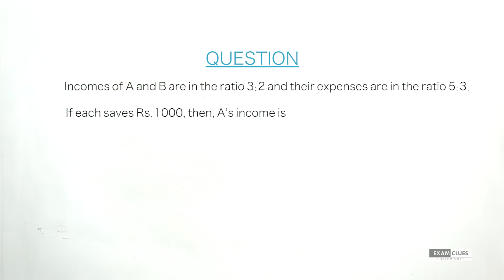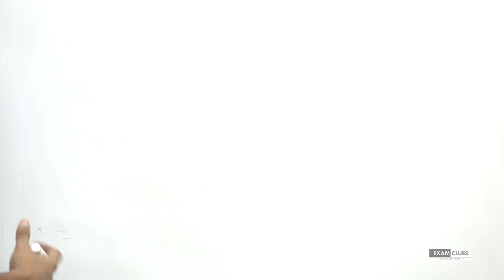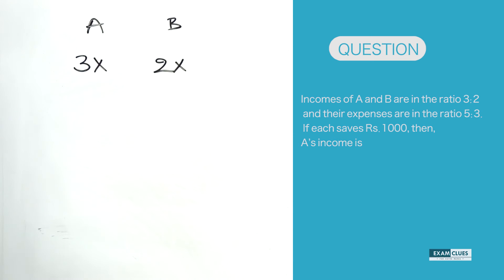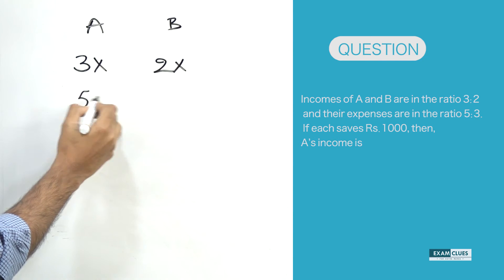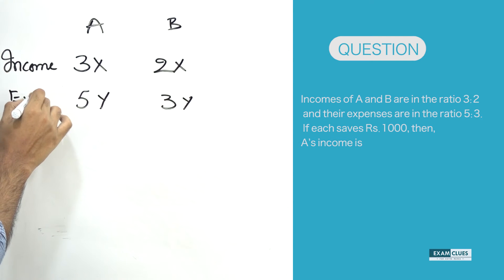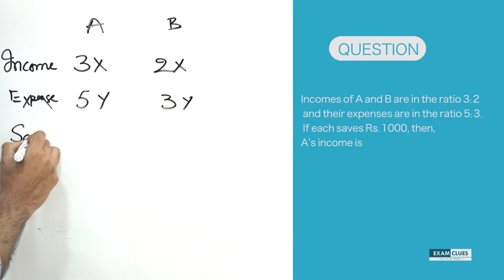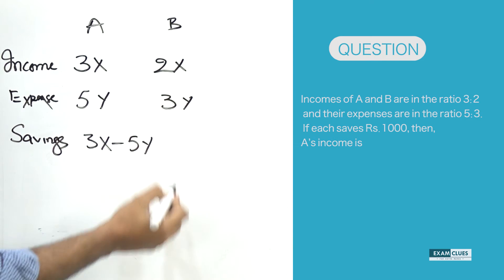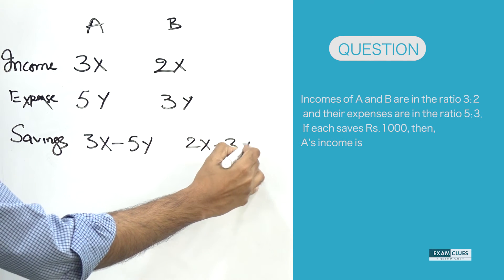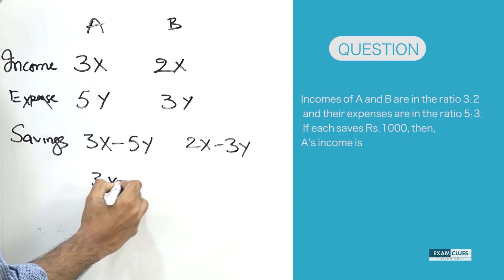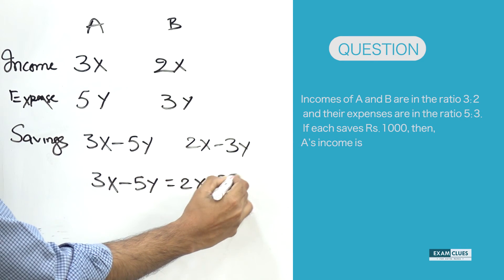Then A's income is how much? Let's assume the ratio of incomes as 3x and 2x for A and B, whereas their expenditures are in the ratio of 5:3, so let's assume that as 5y and 3y. Savings is income minus expenditure: 3x minus 5y for A, and 2x minus 3y for B. Since A and B save equal amounts, 3x minus 5y equals 2x minus 3y.